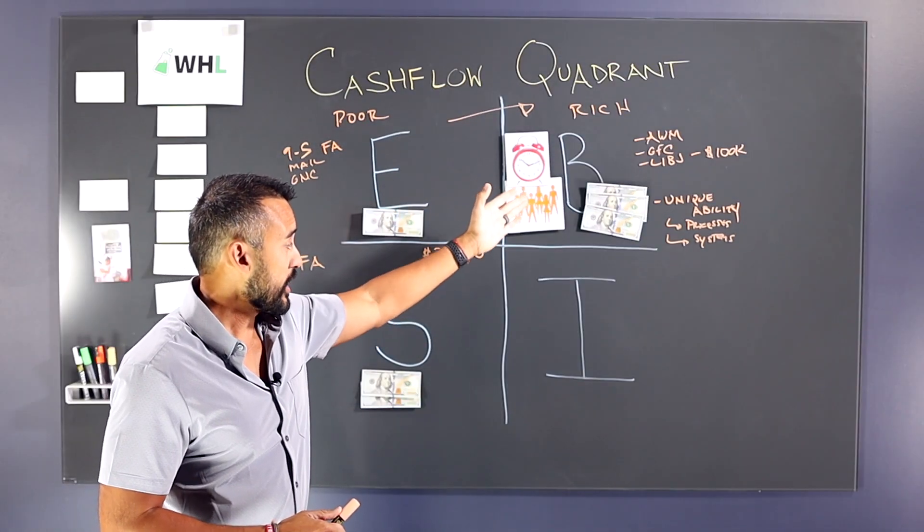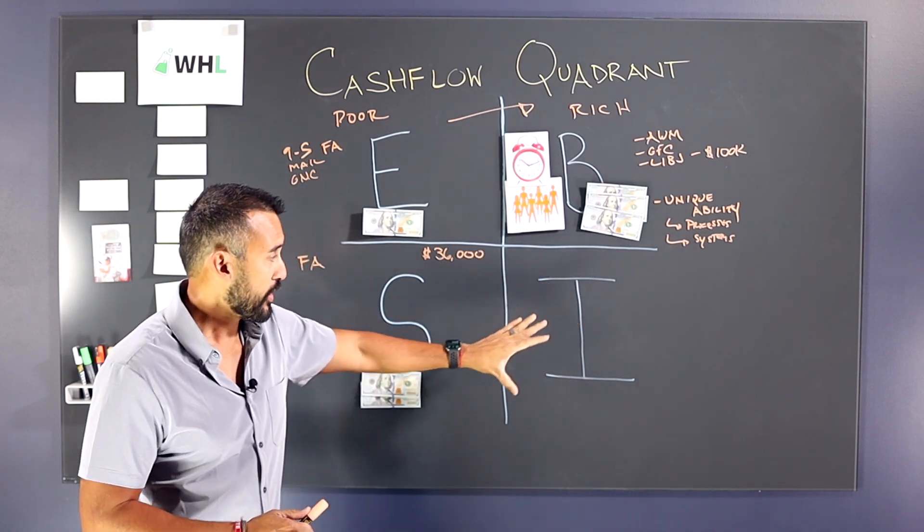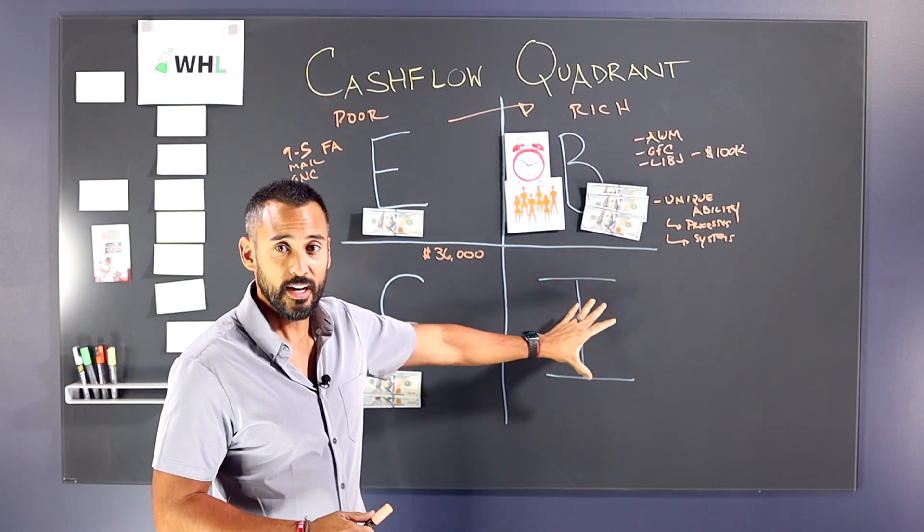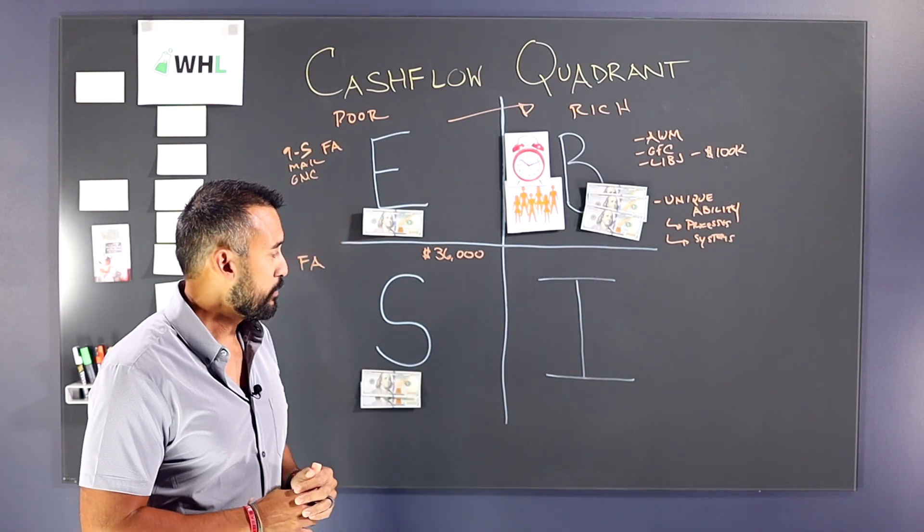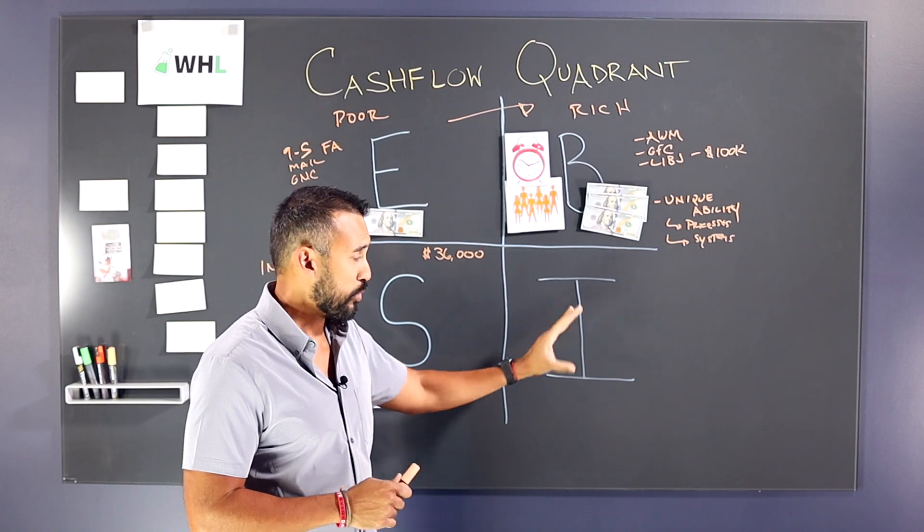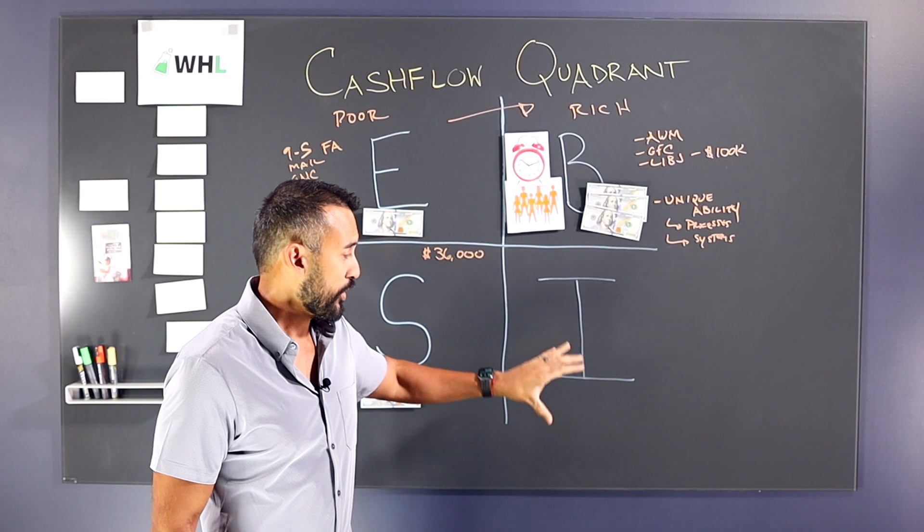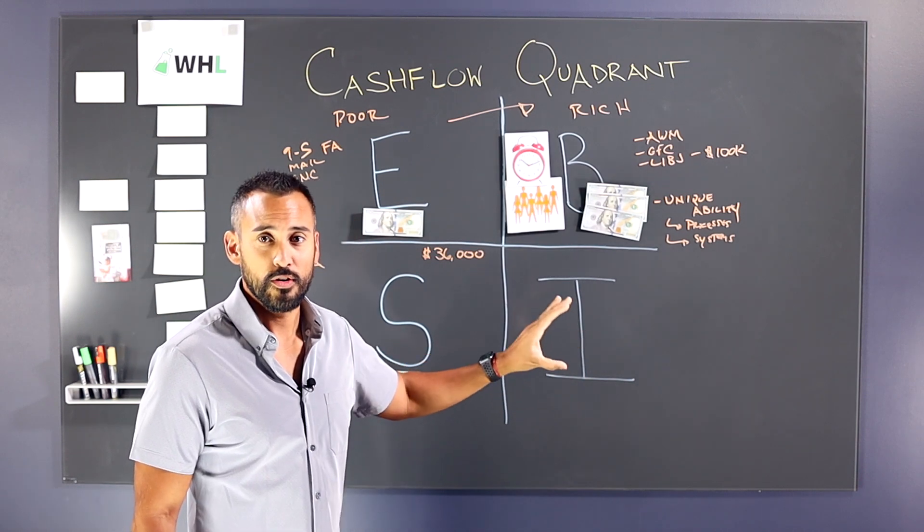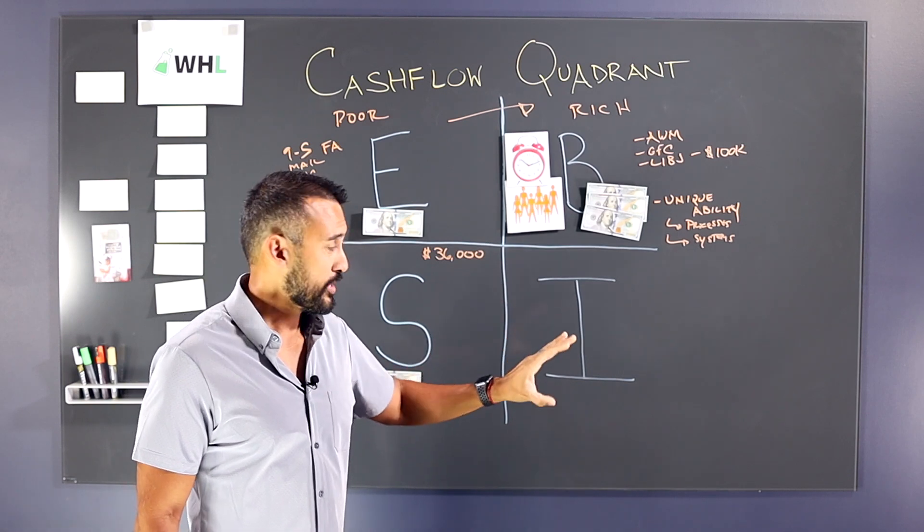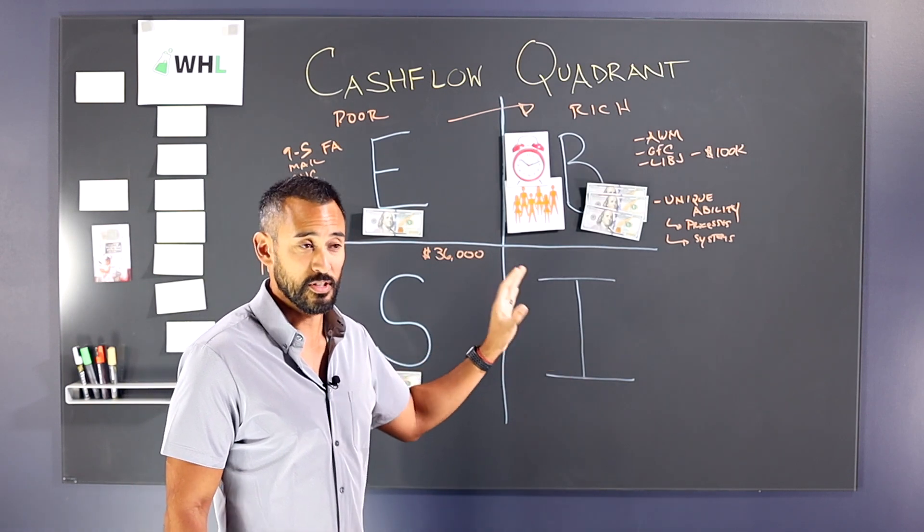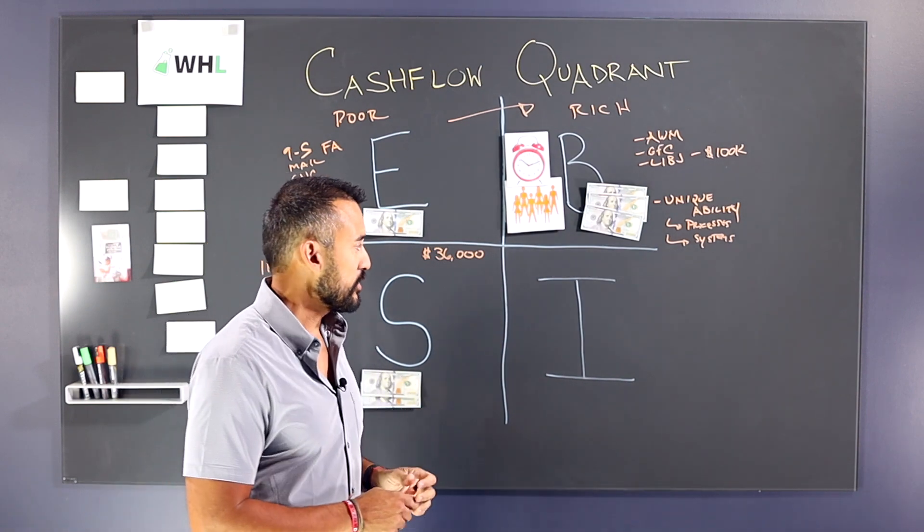And then the quadrant that we all aspire to get to is the I quadrant, which stands for investor. And the key thing about this category, this quadrant is, this is where you hear that common phrase is you want your money to work for you. So basically now your money is doing all the work. You don't have to do anything. Basically just invest your money, sit back, collect the earnings, collect the dividends, whatever that looks like.